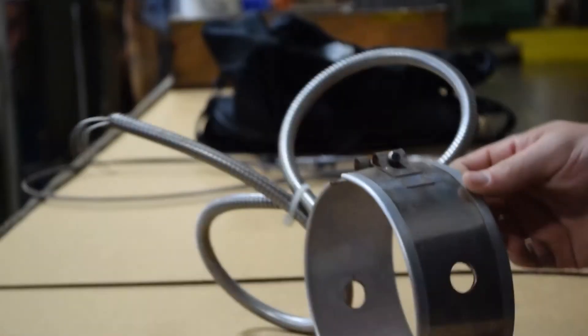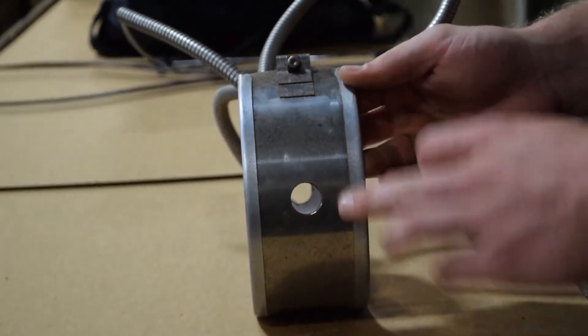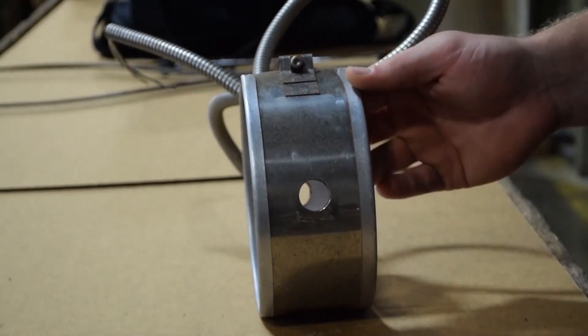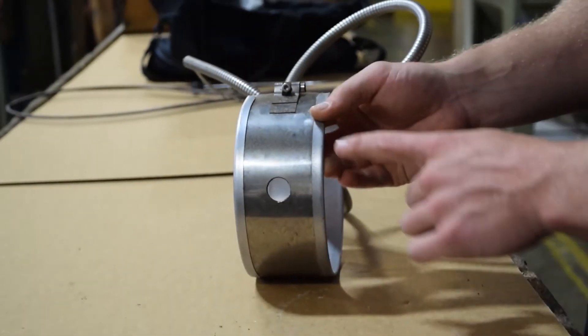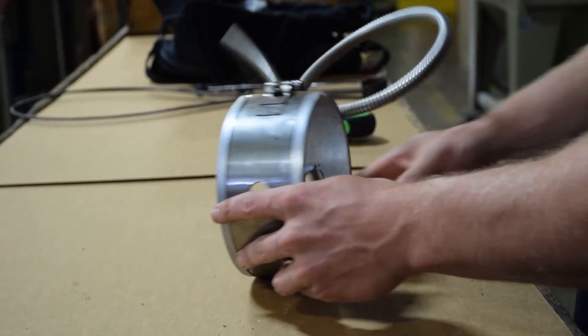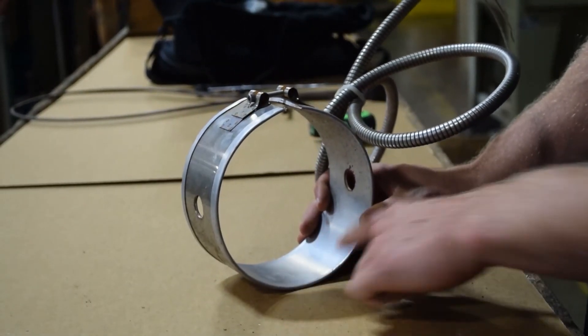This band heater features a stainless steel outer sheath with incorporated straps. The standard outer sheath is the aluminized steel seen on this band heater as the inner sheath.